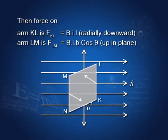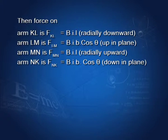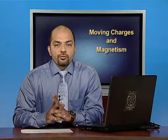Force on arm LM is FLM equals BIL. According to Fleming's left-hand rule, the magnetic force will be upward in the plane of the paper. The force on arm MN is FMN equals BIL; Fleming's left-hand rule gives us the direction as radially upward. The force on arm NK is FNK equals BIB cos theta, and using the same rule, the direction is downward in the plane of the paper.